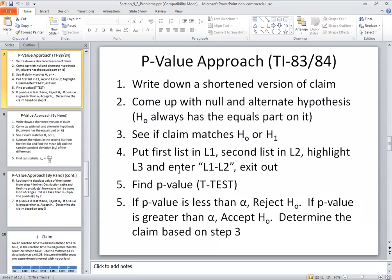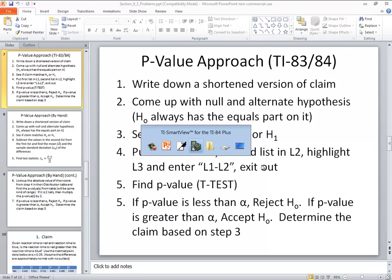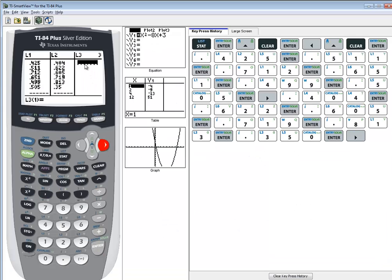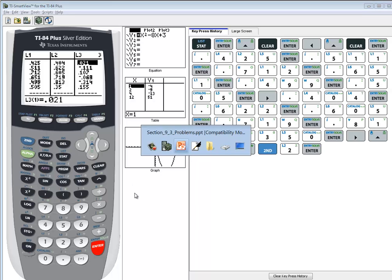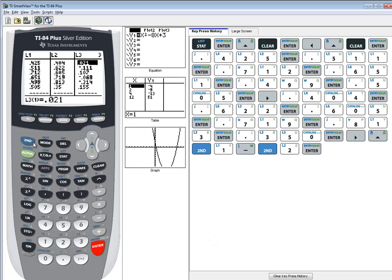Let's go back to our steps. We just did that. Then it says highlight l3 and enter l1 minus l2. Well, let's see what in the world I'm talking about there. If you press your right arrow key, you're over in l3. Now, when I say highlight l3, you have to actually up arrow, and you should see l3 highlighted up here. And then we'll type second one minus second two. And you should see down at the bottom l3 equals l1 minus l2. Again, you have to highlight l3 before you do that. And then you press enter. Now, it doesn't do anything real exciting. It just subtracts these numbers. 0.425 minus 0.404, 0.511 minus 0.622, and so forth. So I suppose if you just have a lot of trouble entering in that formula, you could just do it by hand and put these values in l3. Then it says exit out. So we're going to do a second mode to exit out.